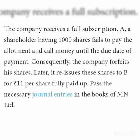Third entry — allotment money due. Allotment money of Rs. 6, where Rs. 6 includes Rs. 4 allotment money and premium of Rs. 2. Entry: Share Allotment account Dr. Rs. 6 lakh (1 lakh shares × Rs. 6), to Share Capital Rs. 4 lakh and to Securities Premium account Rs. 2 lakh. Debit total Rs. 6 lakh equals credit total Rs. 6 lakh. Narration: being allotment money due on 1 lakh shares at the rate of Rs. 6 including premium.